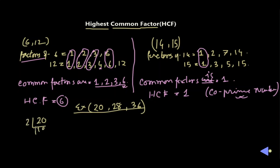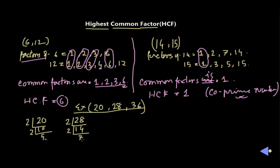The smallest prime number is 2, so we divide 20: 20 divided by 2 is 10, and 10 divided by 2 is 5. Since 5 is a prime number, we can't divide further. So the prime factors of 20 are 2 and 5. For 28, since it is even, divide by 2 to get 14, and 14 divided by 2 is 7. Since 7 is prime, we stop. For 36, divide by 2 to get 18, then by 2 again to get 9. Since 9 is not divisible by 2, we use 3: 3 times 3 equals 9. So we have all the prime factors.